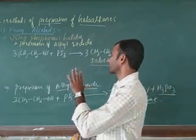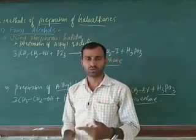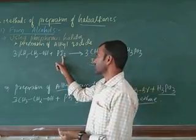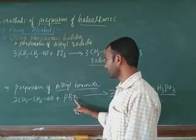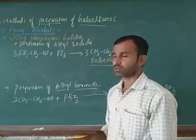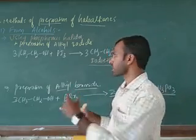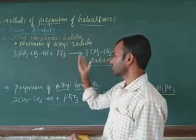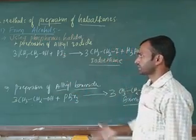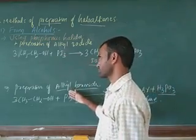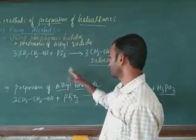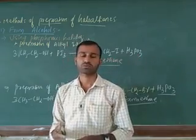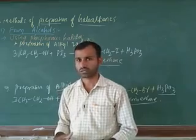Bear in mind: phosphorus is of three types — white phosphorus, black phosphorus, and red phosphorus. In these reactions, PBr₃ and PI₃ are formed from red phosphorus specifically. When bromine passes with red phosphorus, PBr₃ is formed; when iodine passes with red phosphorus, PI₃ is formed. We will study the properties of white, red, and black phosphorus in p-block elements.